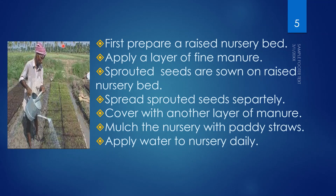For the SRI method, first prepare a raised nursery bed. Take the soil, keep it in one place, and raise it to a height. Then apply a layer of fine manure. Fine manure refers to compost, vermicompost, cow dung, or sheep dung.